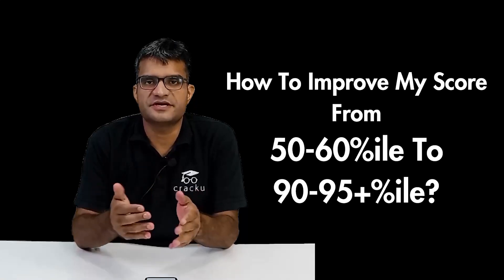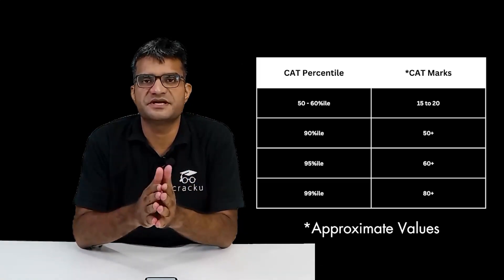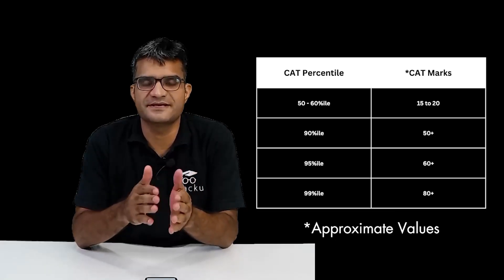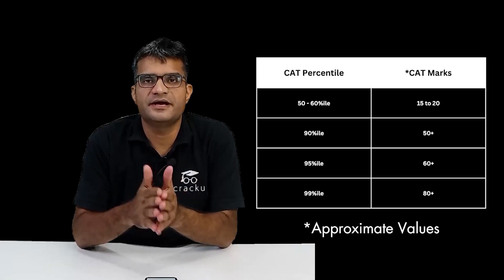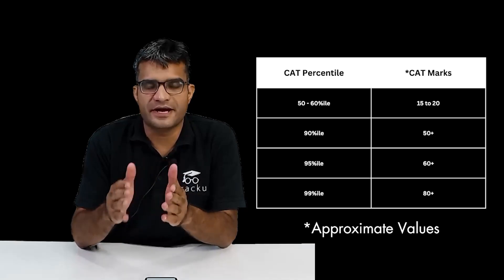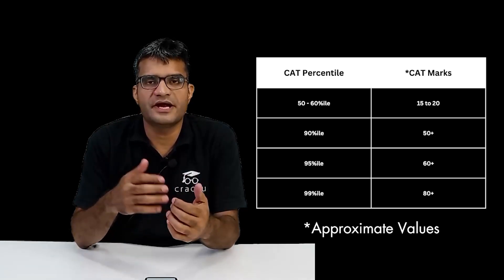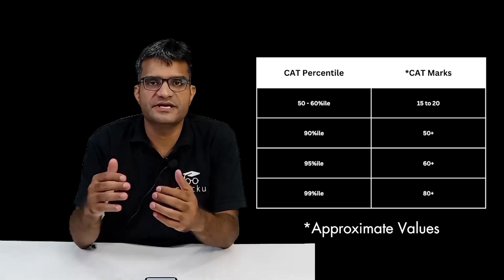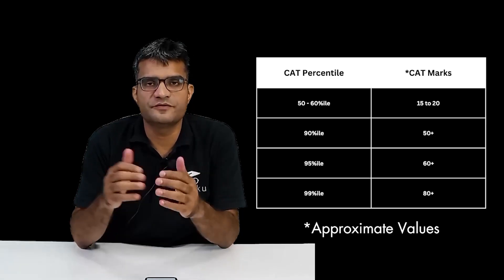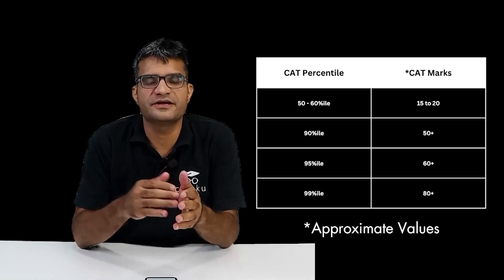Before you actually make your strategy, you should figure out that 50 to 60 percentile would be somebody scoring between 15 to 20 marks in CAT, and 90 percentile would be approximately 50 marks. 95 would be 60 marks, and if you really want to do well, 99 would be around 80 marks. Increasing your score from 15-20 to 50 marks would require some strategy and a lot of hard work.